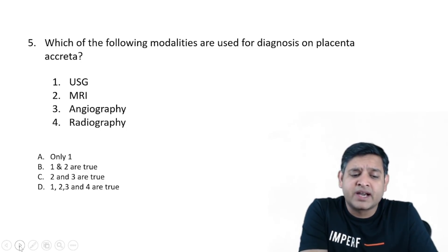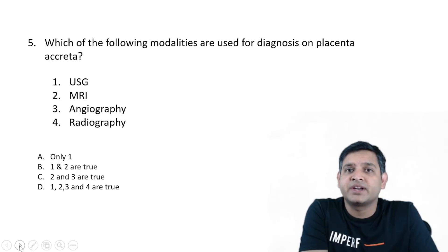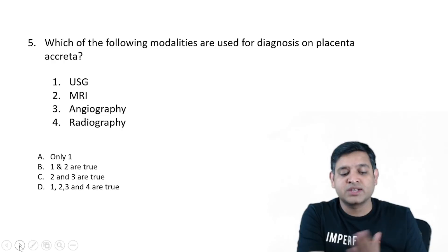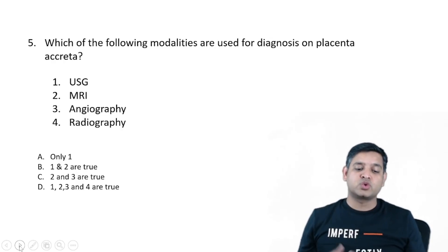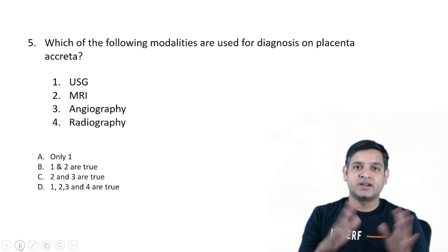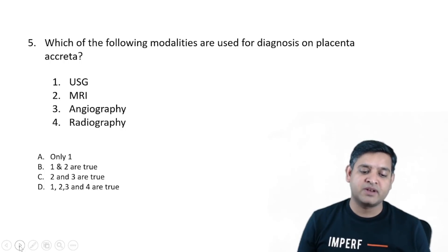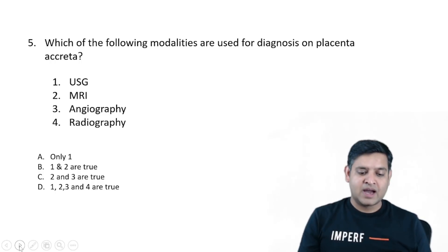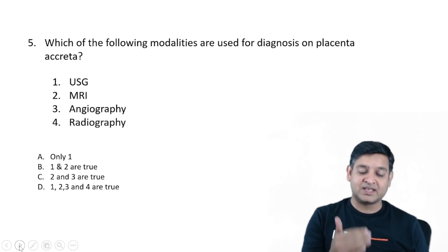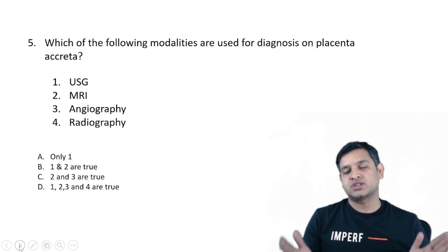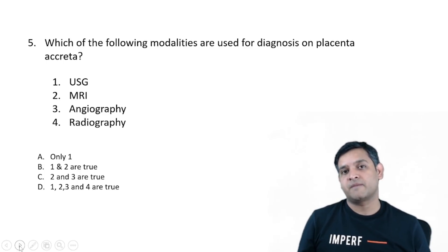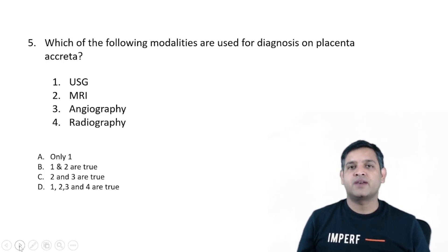There was a question asking which modalities are used for the diagnosis of placenta accreta. The choices I could gather were ultrasound, MRI, angiography, and radiography, structured as — only one is true, one and two are true, two and three are true, or one, two, three, and four are true. According to me, doing a permutation and combination, ultrasound and MRI should be the answer. I would appreciate if you write in the comments if there was a difference in choices.